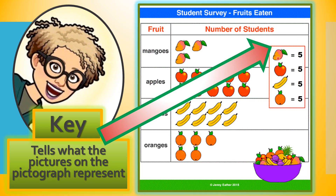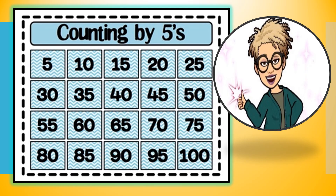Do you remember how to count in fives? Let me help you remember. 5, 10, 15, 20, 25, 30, 35, 40, 45, 50, 55, 60, 65, 70, 75, 80, 85, 90, 95, 100. When we count the fruits on this pictograph, we are going to count in fives.